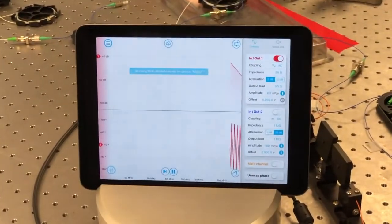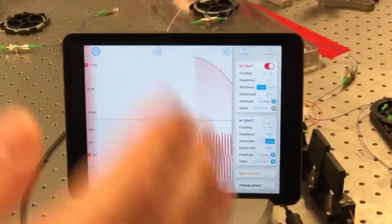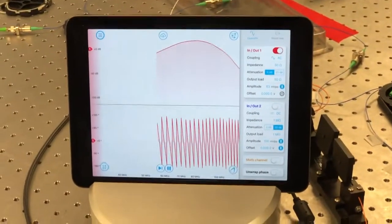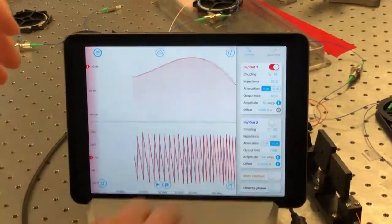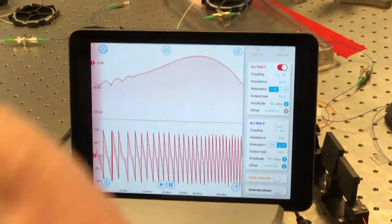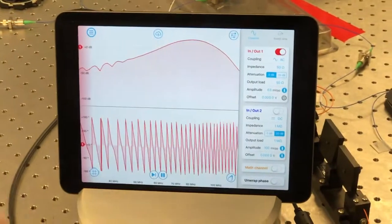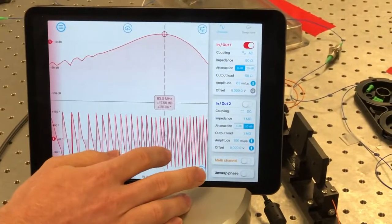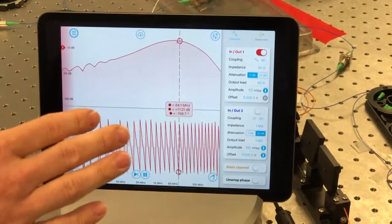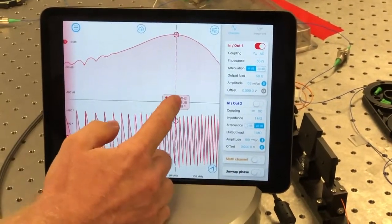And what this is going to do is sweep the frequency at which the AOM is being driven, and then by observing the beat note that is produced at the photodetector on QuokkaLab, it's able to do a comparison of those two and then show me the shape. What's particularly interesting here is the point at which we get maximum power, which should be around 80 megahertz, which it is.